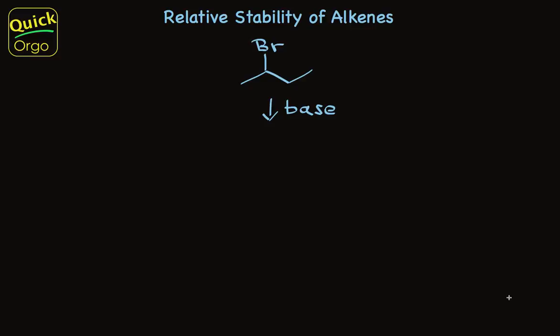Treating an alkyl halide with base is a very common way to make alkenes. Check this out. Secondary butyl bromide gives a decent yield of a pair of alkenes.